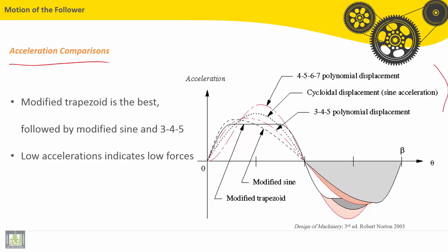We can see that modified trapezoid is the best one. This is the modified trapezoid - it provides the lowest value of acceleration, followed by the modified sine and the 3-4-5 polynomial functions.